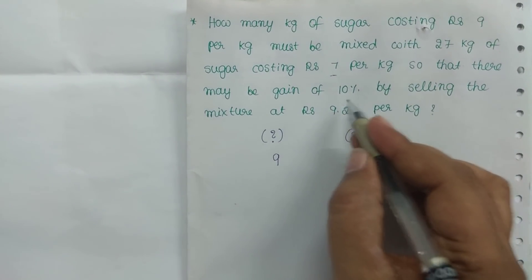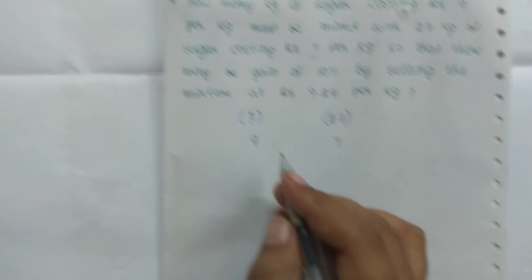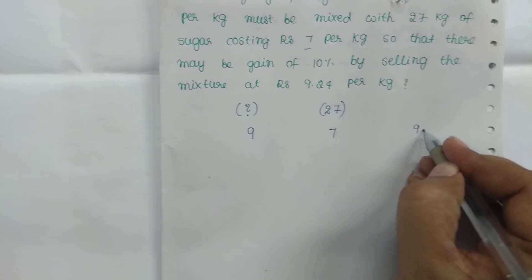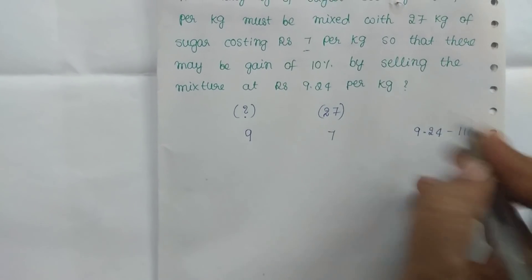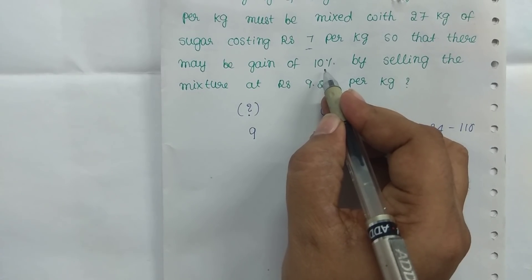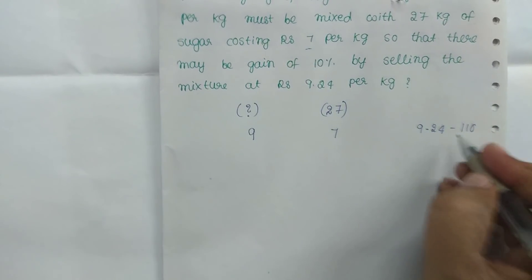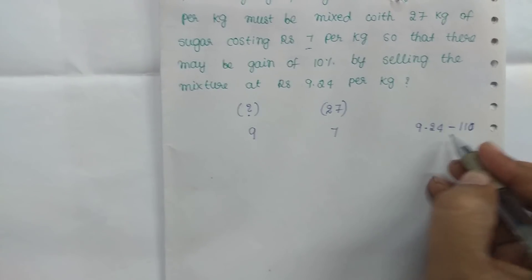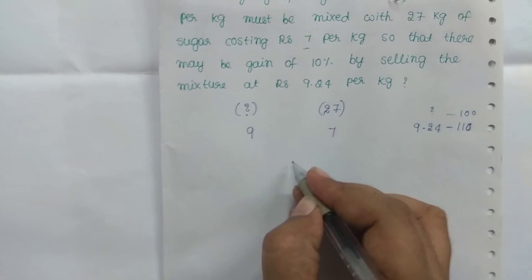We gain 10% by selling the mixture at Rs. 9.25. So we can work out the cost price: 9.25 is the selling price with 10% gain. If we sell at 110 out of 100, the value is 9.25.